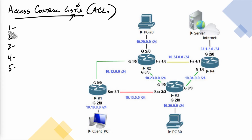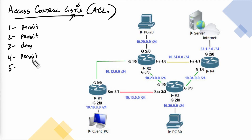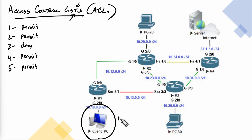For example, at line number one, we're saying we want to permit some specific type of traffic to be routed across our network. Line two permits a different set of traffic. Line three denies some specific traffic, and line four permits other traffic, and line five permits yet more traffic. To refine this, let's imagine we're controlling traffic sent by a computer at 10.10.0.50 going to a web server at 23.1.2.100. One use of an access control list is to permit or deny certain types of traffic as it's forwarded through the network.